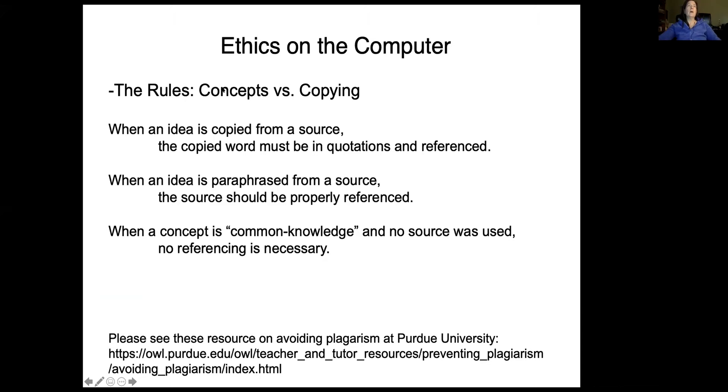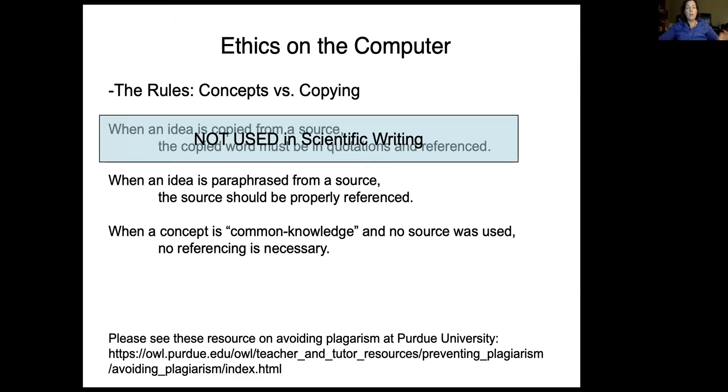So here are the rules when it comes to ethics in writing. Oftentimes, maybe you did this as an undergraduate, you can copy an idea from a source, and you put that quotes, the quote, the copied words in quotations, and then you reference where you got the source. And that is perfectly acceptable in writing in English and history. But the fact is that is not appropriate for science. We literally never, in scientific writing, quote other people's words.